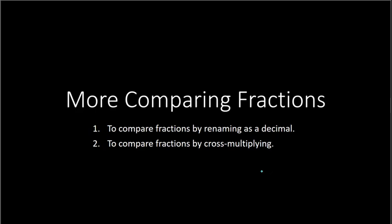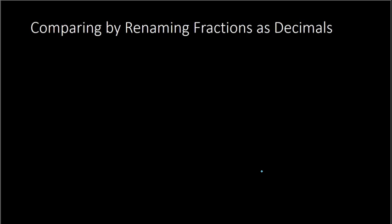So let's begin with the first method. We are going to compare by renaming the fractions as a decimal. We've learned in a previous lesson that we can convert a fraction into a decimal. For example, if we had the numbers 4 fifths and 3 fourths, we could convert each of these into a decimal and then compare the decimal equivalents.